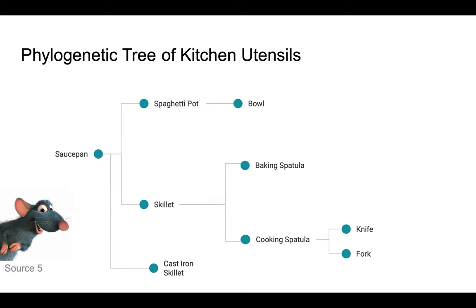On this slide, I have represented where anagenesis occurs. This is the evolution that occurs without the splitting of a lineage. It occurs from the saucepan to the cast iron skillet, and from the pot to the bowl. Thus, it occurs two times.